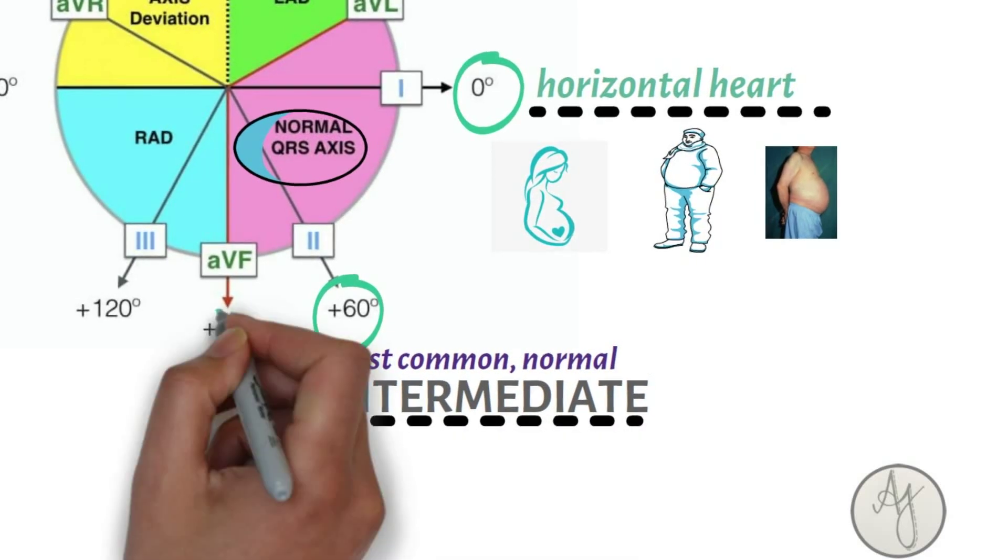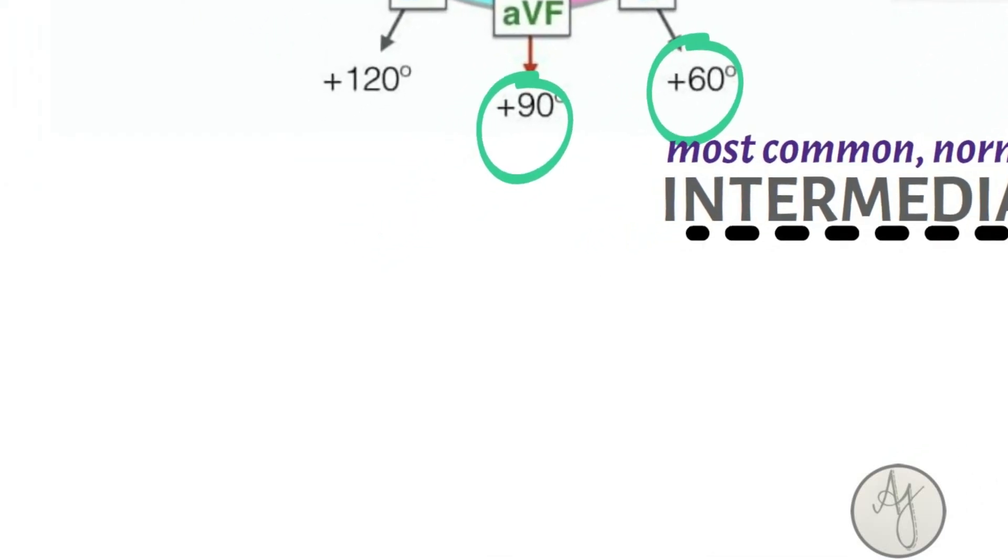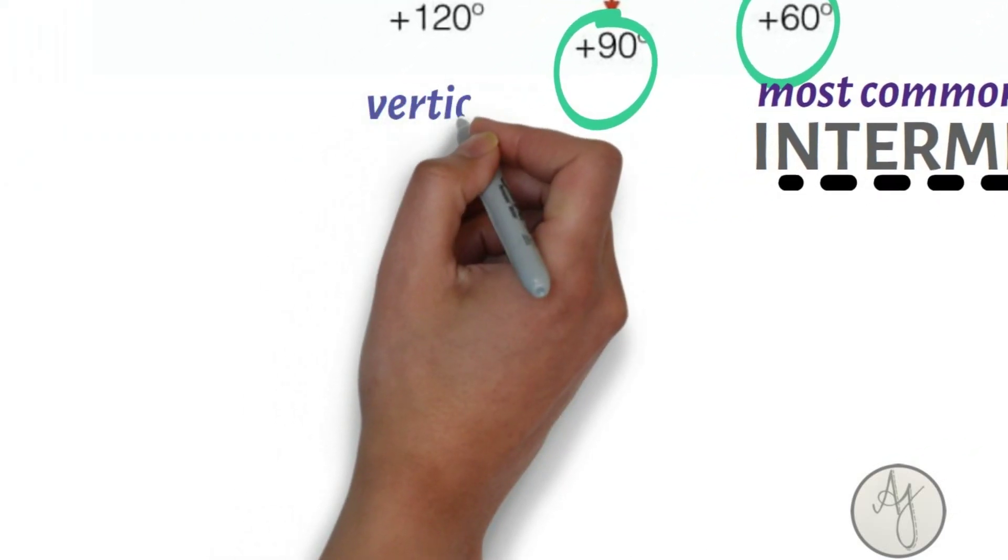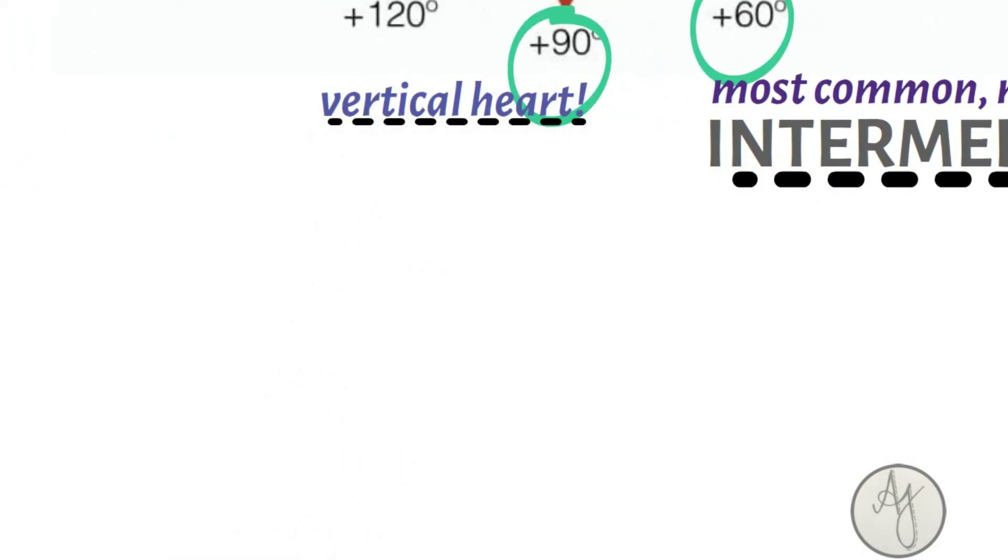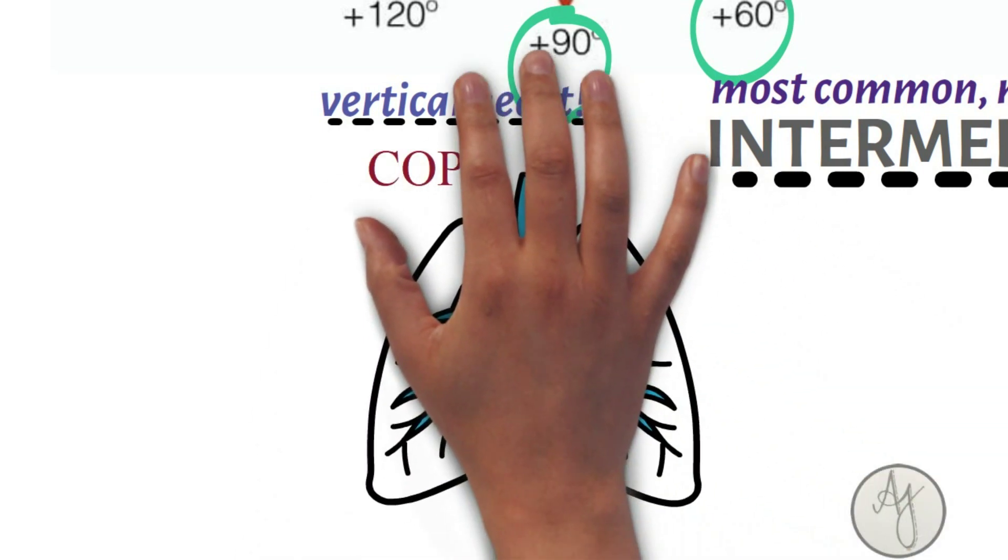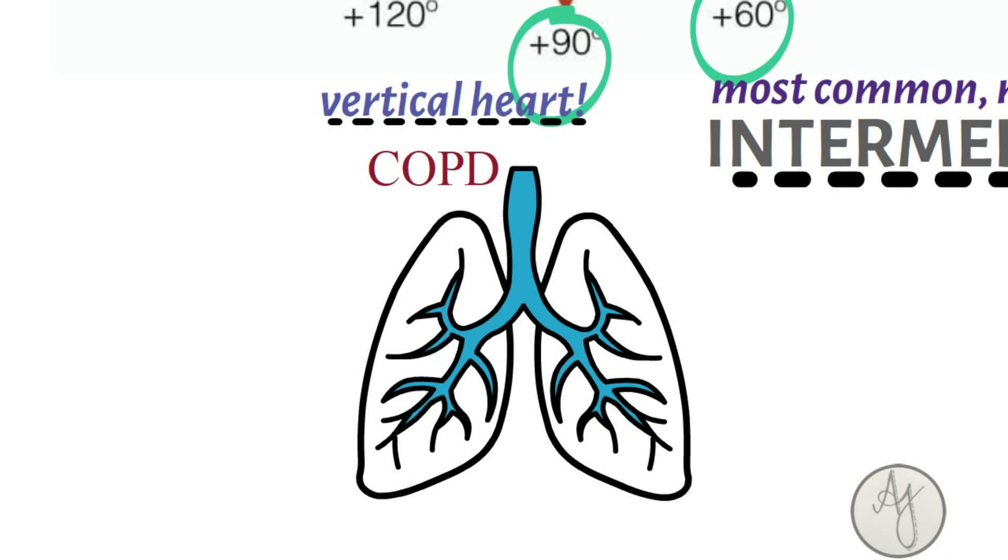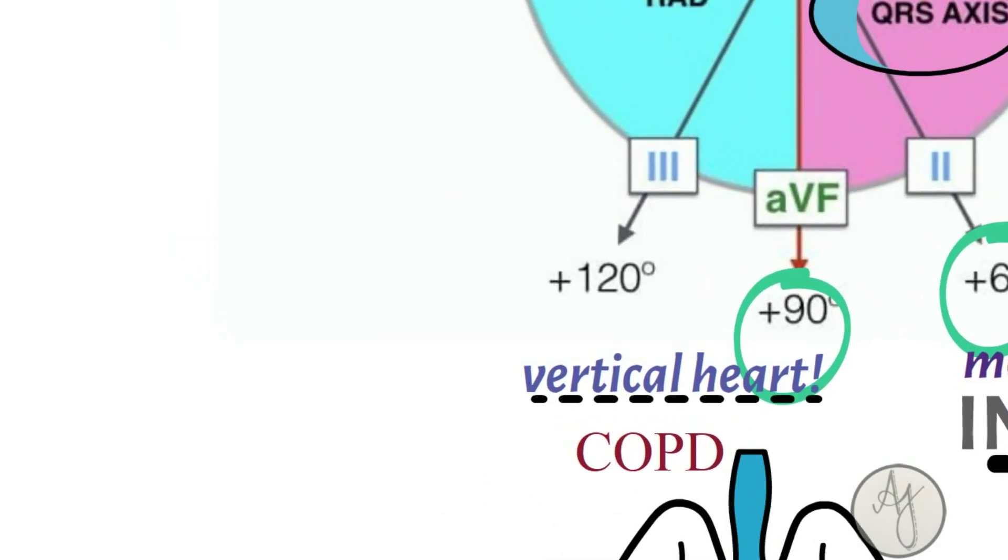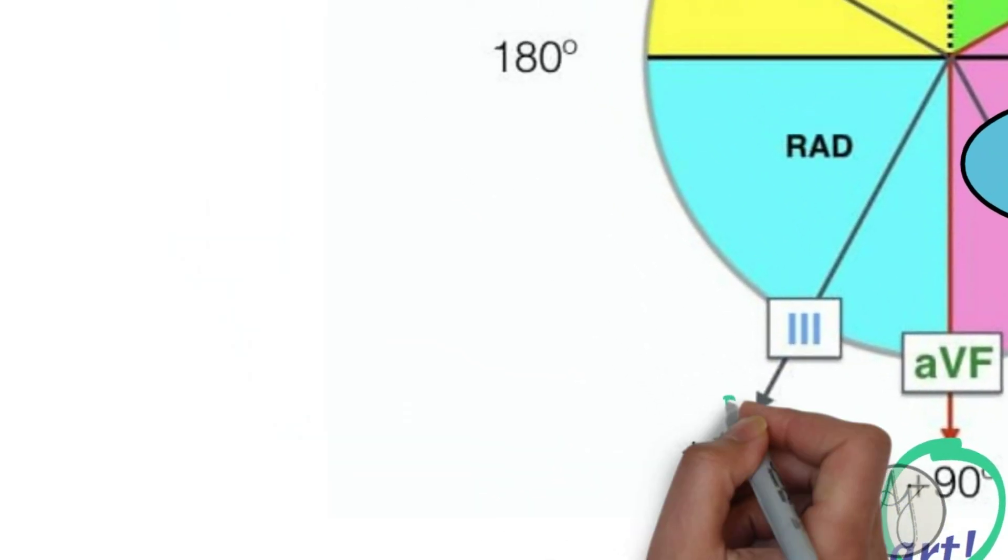Plus 90 degrees is normal and that is a vertical heart. It can be normal, but it mostly occurs in tall people or who've come with COPD or emphysema and things like that.